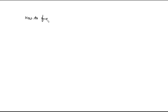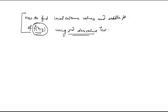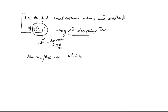In the previous video I explained how to find local extreme values and the saddle point of a function of two independent variables using the second derivative test. We did questions where the function is defined on the whole domain R cross R. Today I will explain how to find absolute maxima and absolute minima of a function of two independent variables over a closed bounded region.